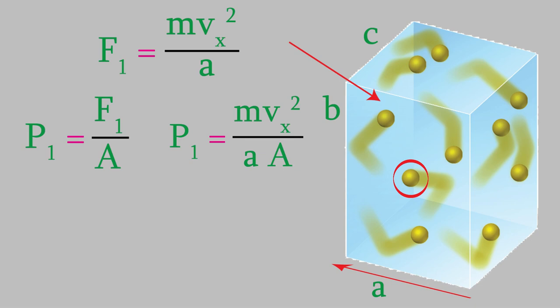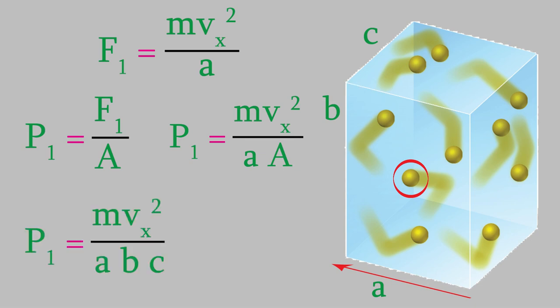We can put b times c in the denominator of our expression for the pressure. Now we have an equation relating pressure to the mass and velocity of the particles and the dimensions of the box. We can simplify because the denominator a times b times c is just the volume of the box, so we replace it with capital V.